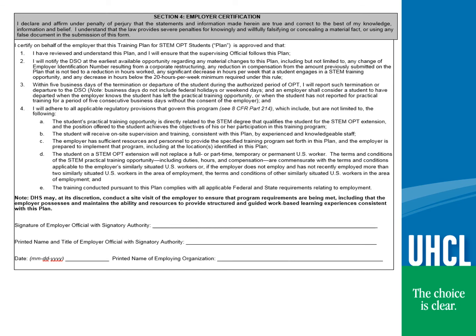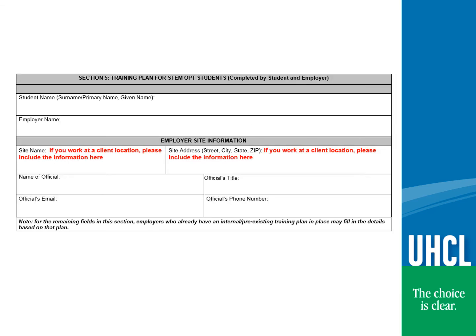Your employer will determine who is eligible to sign section 4 of the Form I-983. This can be a different person who will sign section 6 — for example, this could be an HR manager or your supervisor. Please make sure that it is not an electronic signature; have the employer physically sign the form before scanning. Please ensure that the information in employer site information is accurate — where are you actually working? This may or may not be the same as the employer address. This is the information that ICE will use for any site visit. The name of official refers to your direct supervisor, the person who is actually supervising you at the location at which you are working.